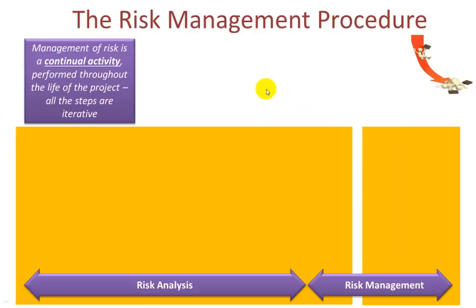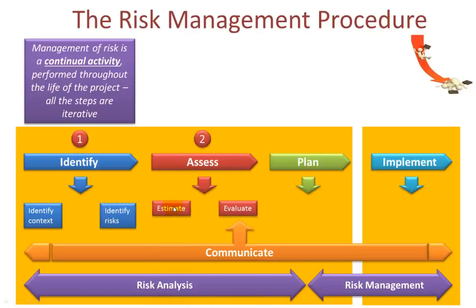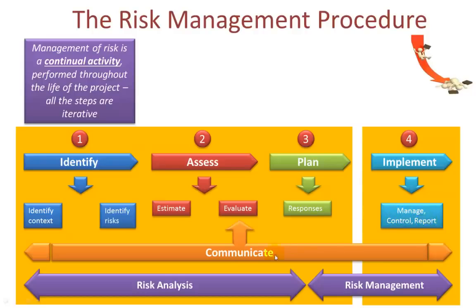Let's look at the risk management procedure. The management of risk is a continual activity performed throughout the life of the project; all of these steps are iterative. I've redrawn the diagram as a linear flow, split into risk analysis and risk management. There are actually five steps, with the communicate step running in parallel since the communication of risk needs to occur throughout the project. Step one is identify — where we identify the context of each risk and the risk itself. In the assess step, we estimate the risk and evaluate it. In the planning step, we determine what responses are appropriate. And in the implement step, we manage such responses, control and report against them. Communicate is a continuous activity running through steps one to four.